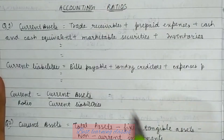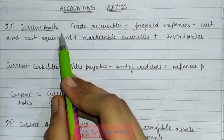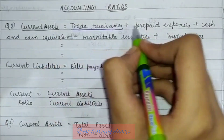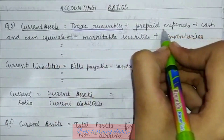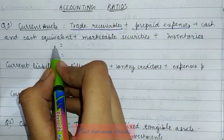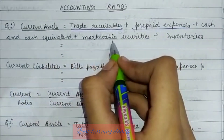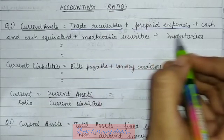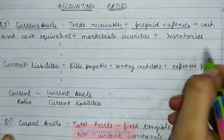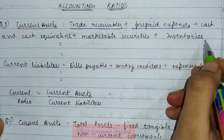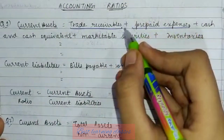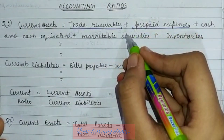So, students, what are the current assets? Trade receivables — as we know — are current assets. Prepaid expenses are current assets. Cash and cash equivalents are current assets. Marketable securities are current assets. And inventories are current assets. So all of these are current assets. Add them all together and you get the value of current assets.